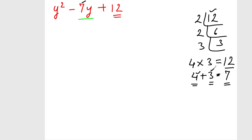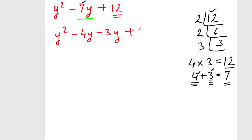So we take 4 and 3. That means we have to split minus 7y in the form of minus 4y and minus 3y. Now we solve y squared. Since there is a minus sign, here it is minus 4y and minus 3y. When we add, we get minus 7y and 12 as it is. The 3 terms are now converted into 4 terms.